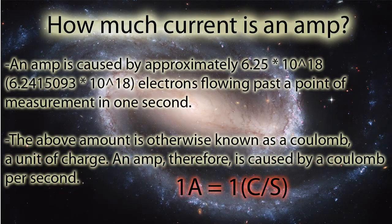How much current is an amp? An amp is caused by approximately 6.25 times 10 to the 18 electrons flowing past a point of measurement in one second. That amount is otherwise known as a coulomb, a unit of charge. An amp, therefore, is caused by one coulomb per second.